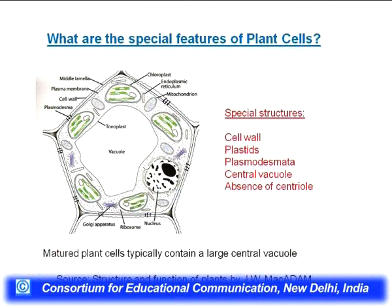Let us look at the diagram of a plant cell. Typically, if you draw a plant cell you would draw it with a geometric shape, unlike an animal cell which is roundish. The outer structure is the cell wall, which I have discussed — this is the structural component present outside the plasma membrane. Where the animal cell ends at the plasma membrane, in a plant cell the plasma membrane is just inside the cell wall. This is a key distinction between plant and animal cells.